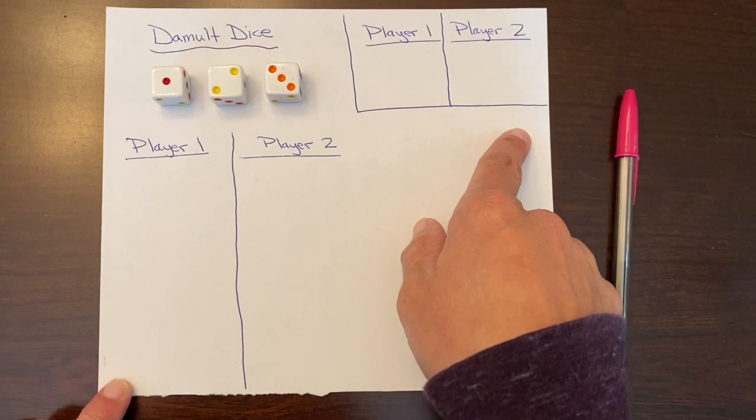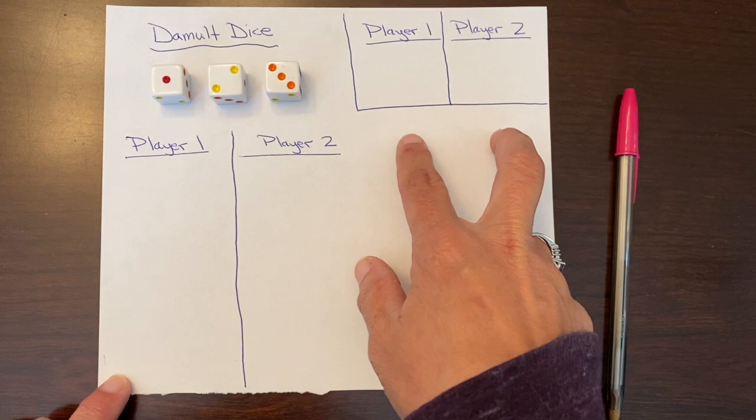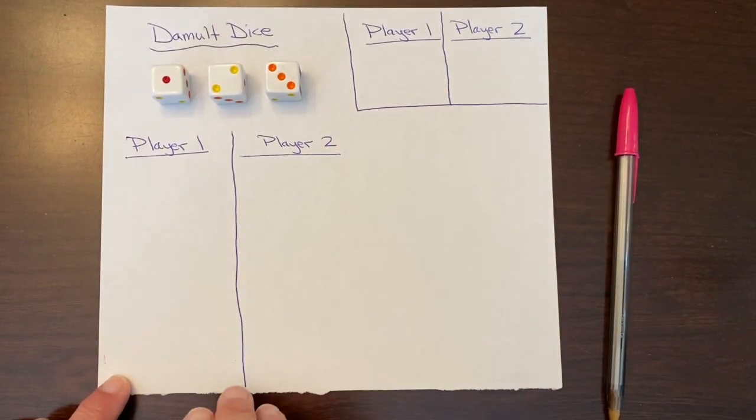So in our game we're going to play to ten points. As long as all players decide and agree on the same amount of points at the beginning of the game, you're good to go.